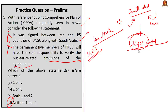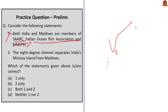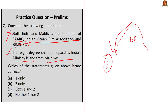Consider the following statements about India and Maldives. Statement 1: Both India and Maldives are members of SAARC, Indian Ocean Rim Association, and BIMSTEC. This is incorrect — while both are members of SAARC and IORA, Maldives is not a member of BIMSTEC, as BIMSTEC members are peripheral states of the Bay of Bengal and Maldives lies southwest of India. Statement 2: The 8-degree channel separates India's Minikoy Island from Maldives. This statement is correct — the 8-degree channel separates Minikoy Islands of Lakshadweep from Maldives. So the correct answer is option B: statement 2 only.